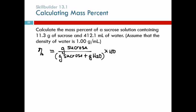Okay, so there's our equation. What mass of sucrose do I have? 11.3 grams of sucrose. So far, so good. And then in the denominator, I need that mass again, 11.3 grams, plus I need the mass of water.